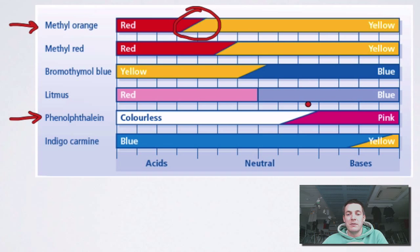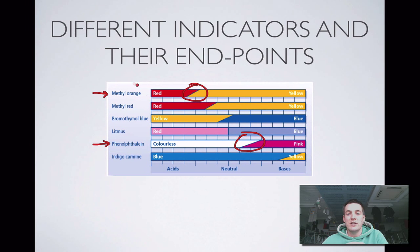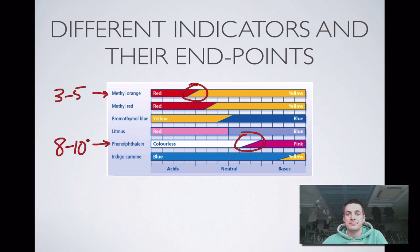Phenolphthalein has a very different end point — it's changing colour between pH 8 and 10, going from colourless in the acidic range to pink in the basic range. It's not important that you remember all these end points, but it is good if you can remember the end points for methyl orange and phenolphthalein: about 3 to 5 for methyl orange and about 8 to 10 for phenolphthalein. Remember, these are pHs at which the indicator changes colour.